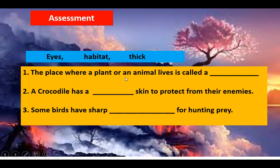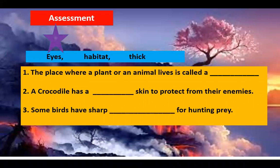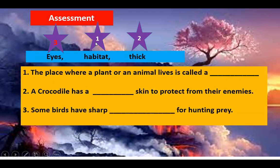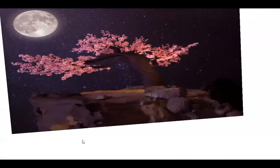Fill in the blanks. The place where a plant or an animal lives is called a habitat. A crocodile has thick skin to protect from its enemies. Some birds have sharp eyes for hunting prey.